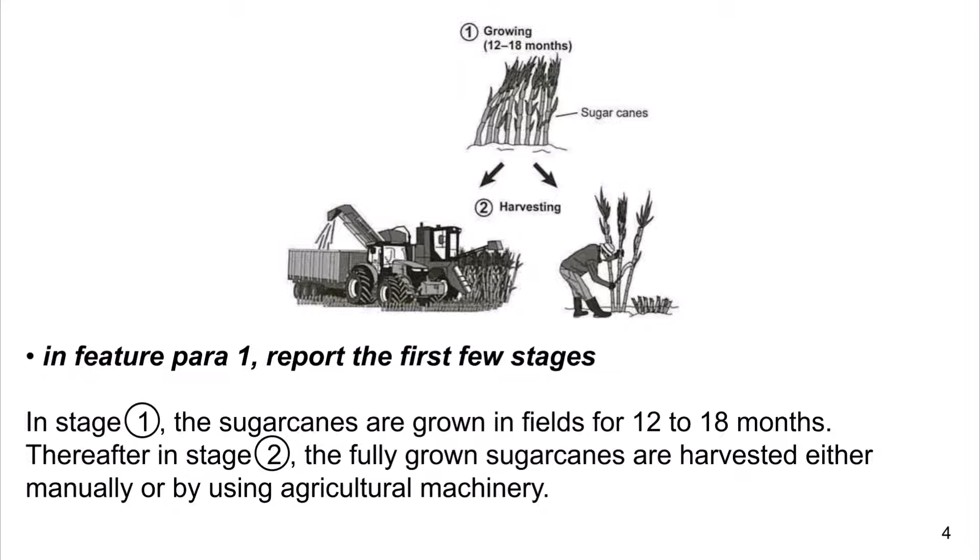In Feature Para 1, report the first few stages. In Stage 1, the sugarcanes are grown in fields for 12 to 18 months. Thereafter, in Stage 2, the fully grown sugarcanes are harvested either manually or by using agricultural machinery.